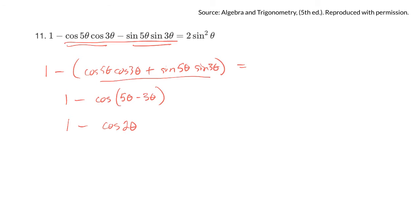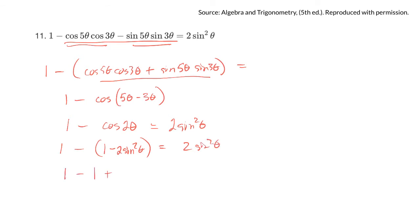So we have 1 minus cos 2θ. Now cos 2θ is an identity: cos 2θ equals 1 minus 2 sin²θ. So substituting: 1 minus (1 minus 2 sin²θ). Applying the minus through, I get 1 minus 1 — that cancels — leaving 2 sin²θ, which equals the other side. QED. So the key was using that double-angle identity for cosine.